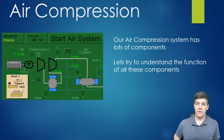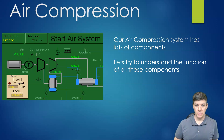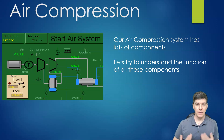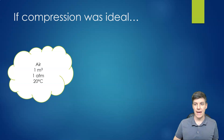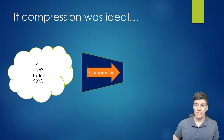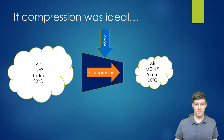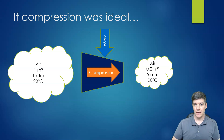Let's look at our air compression system — it's not just an air compressor. We have lots more going on than just a device that takes air and compresses it. If we thought about what we would have with perfect compression, we take some air, compress it, add a little bit of work, and ideally we would just reduce the volume so our pressure goes up. That's a good thing because we want to store all that energy in the form of pressure.